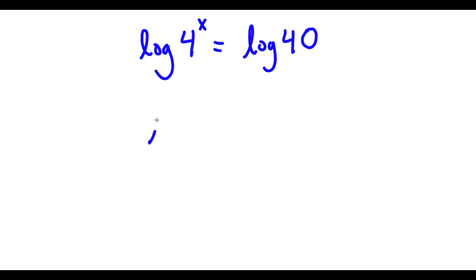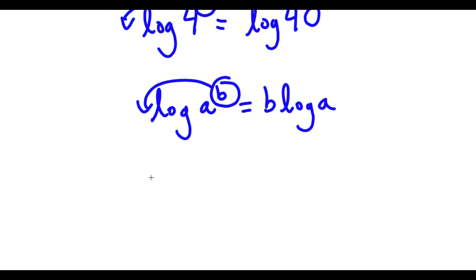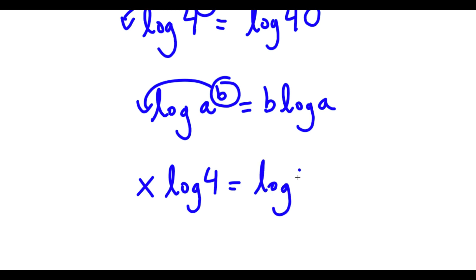If I have something in the form log a to the power of b, I can move the exponent b to the front. So this is equal to b times log a. In this case, I have log 4 to the power of x, so I can move x to the front. So now I have x times log 4 is equal to log 40.